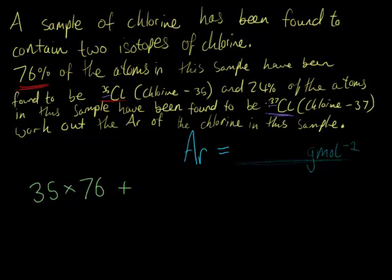We know that 37 is the mass number of this isotope. And we know that the percentage abundance of it in this sample is 24%. So what I'm going to do in this calculation here is I'm going to add 37 multiplied by the 24%. So 37 multiplied by the 24% and I'm just going to write that percentage as 24 for now.